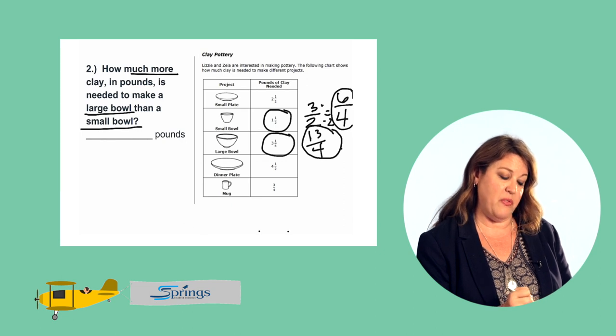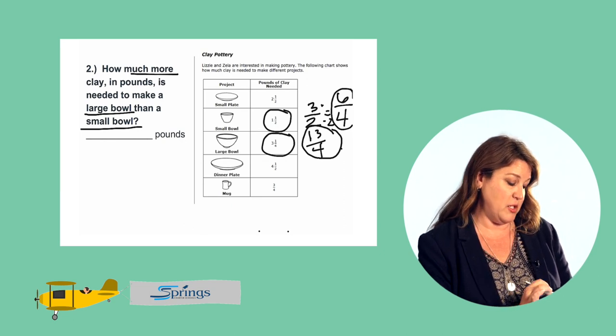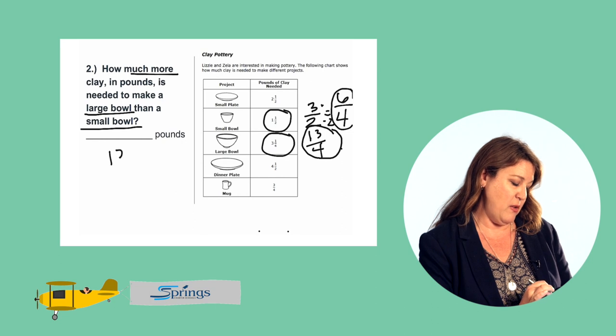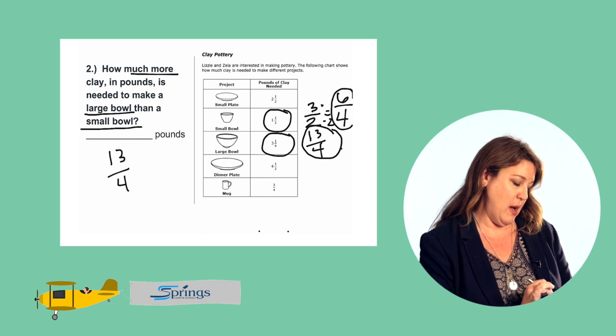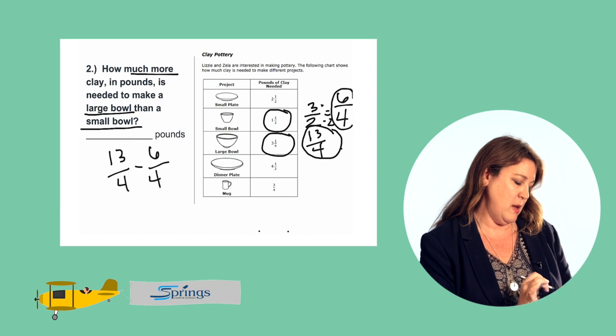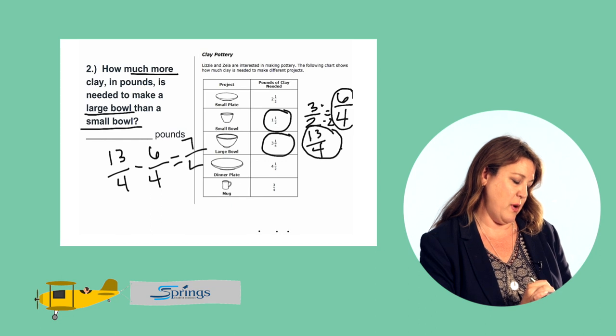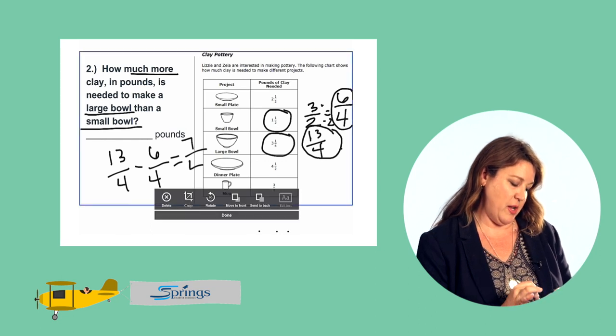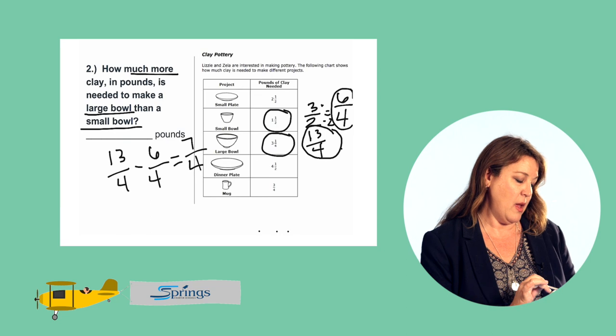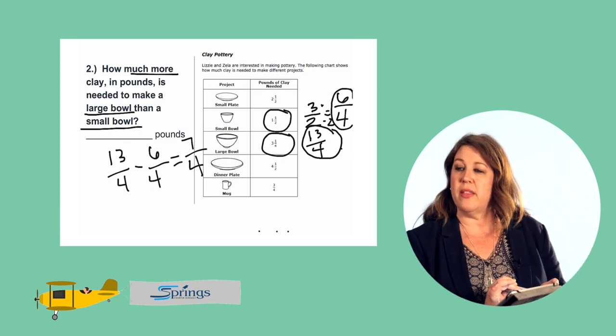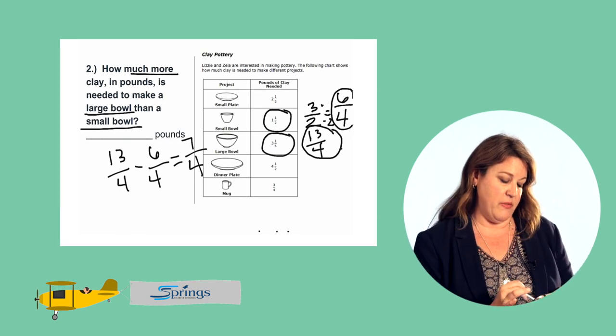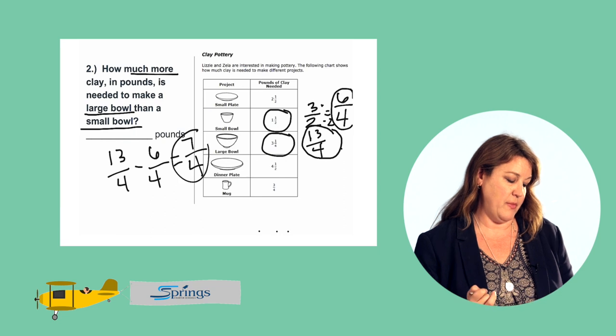So they're both in fourths, which makes it really easy to subtract. We have 13 fourths minus six fourths. 13 minus six is seven, so we have seven fourths. So the difference between the large bowl and the small bowl is seven fourths. And that's all that we need to answer question number two.